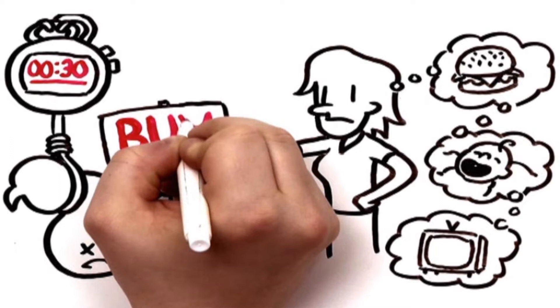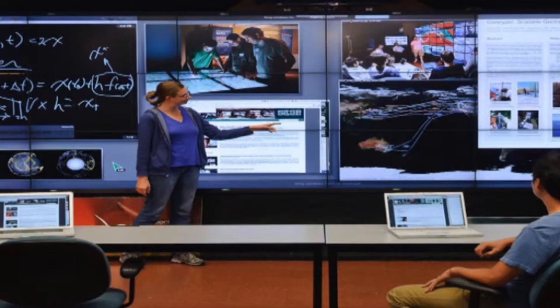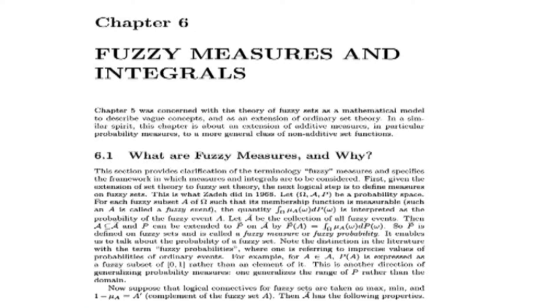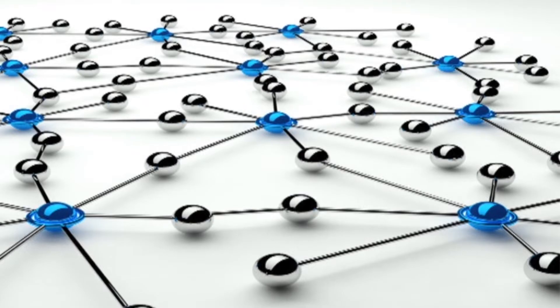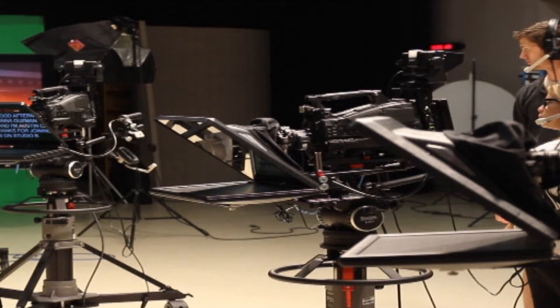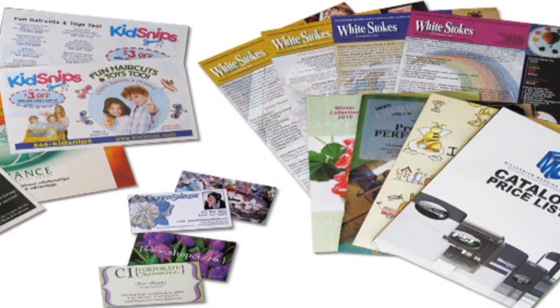The electronic environment has the potential to enrich educational materials by turning dry text into salient animation, vague concepts into visualization, and rigid curriculum and bounded books into dynamically accessible resources. With the increased power of computers and networks and at the same time falling prices, the electronic media will make available vast educational resources that will be cost competitive with printed materials.